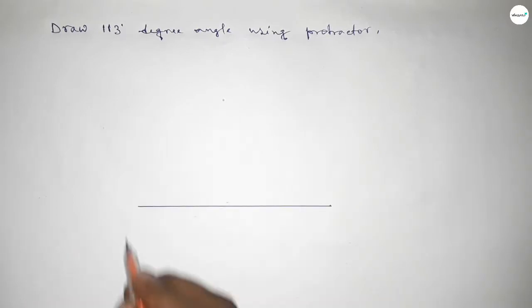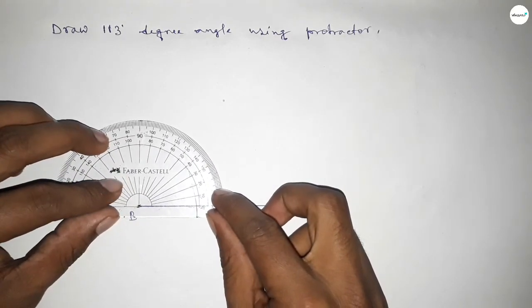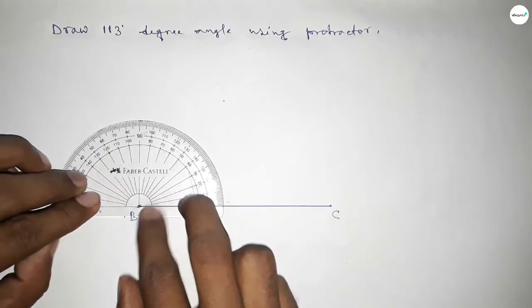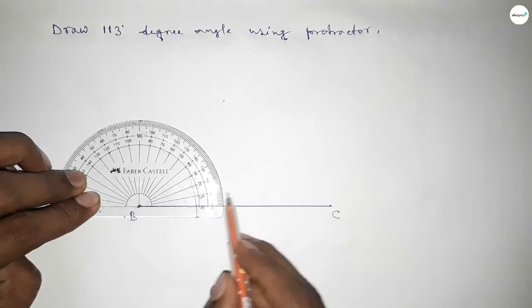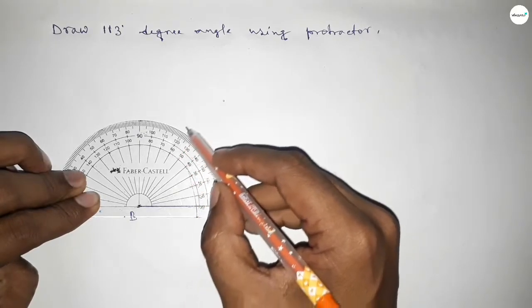So first drawing here a line, next taking here point B and here point C. Now putting the protractor on the point B perfectly, then counting the angles. So this is starting angle 0, 10, 20, 30, 40, 50, 60.